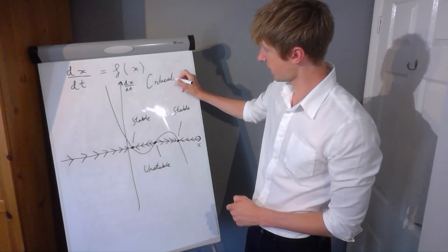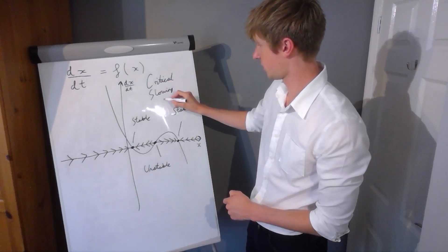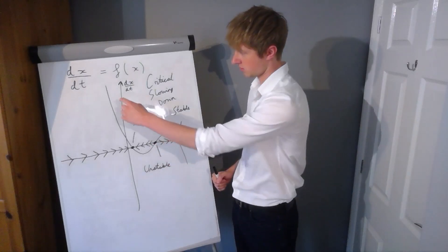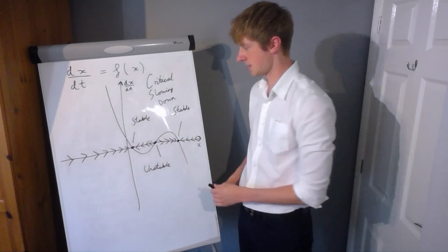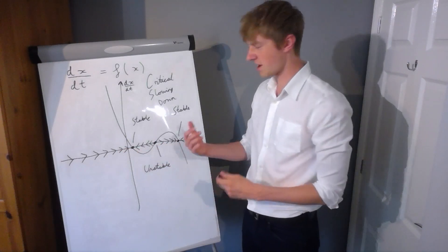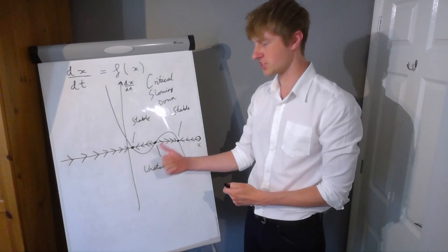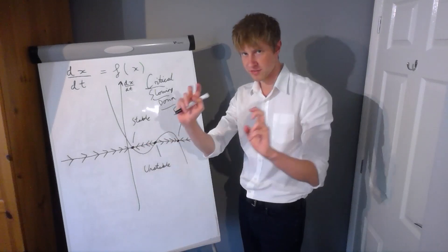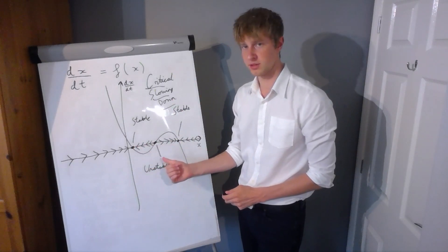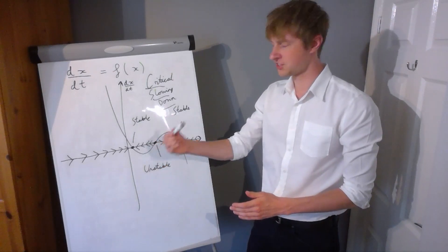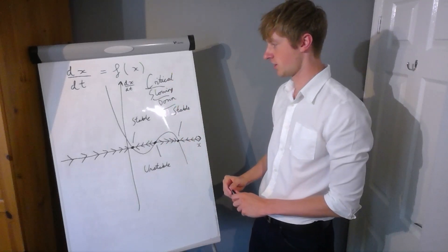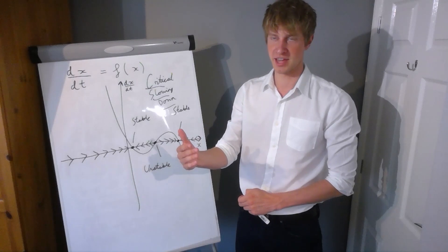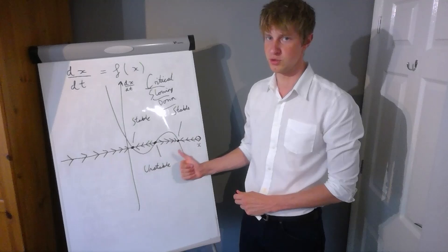Critical slowing down relates to the original example with three fixed points — stable, unstable, and stable. We said the system would return to equilibrium, but we never talked about how quickly it would do so. Critical slowing down is the property that when you come to a bifurcation point — which is where stable and unstable equilibria are created or destroyed — the rate at which the system returns to equilibrium decreases. So when we're studying systems in the real world, we can use this property to determine whether or not we're going to undergo a bifurcation, which will cause the system to undergo a critical transition to a new stable equilibrium point.